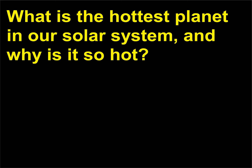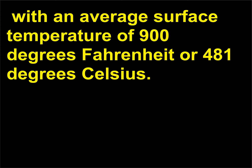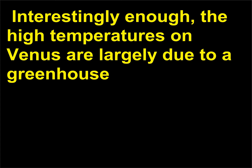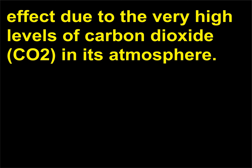What is the hottest planet in our solar system, and why is it so hot? Venus is the hottest planet, with an average surface temperature of 900 degrees Fahrenheit or 481 degrees Celsius. It's the second closest to the Sun, with only Mercury orbiting closer. Interestingly, the high temperatures on Venus are largely due to a greenhouse effect caused by the very high levels of carbon dioxide, CO₂, in its atmosphere.